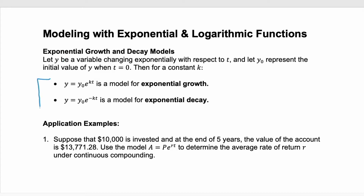First look at our equations for exponential growth and exponential decay, and notice that the only difference is that the exponent on the decay model is negative. y is the variable changing exponentially with respect to t, time. y₀ will be your initial value when time is zero, and k is going to be our constant.